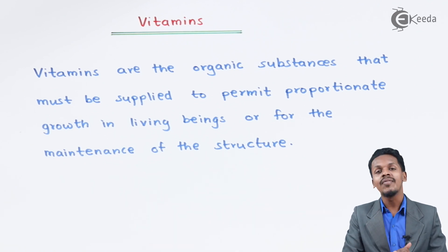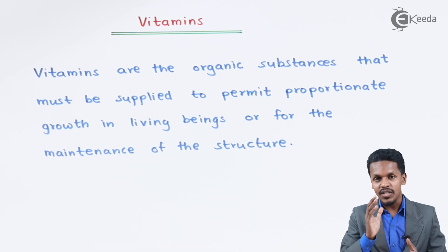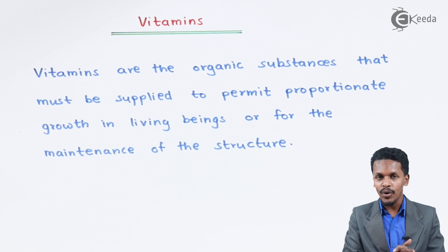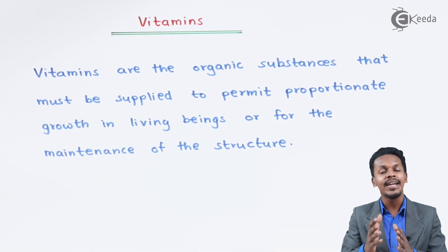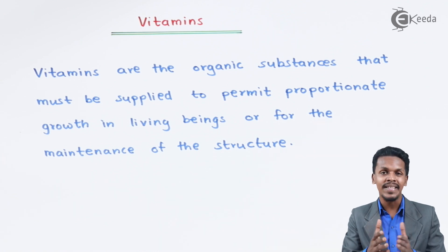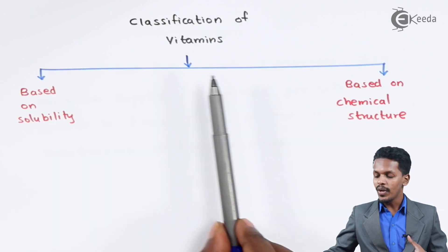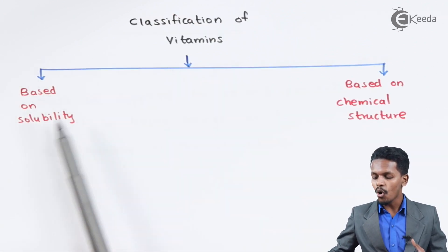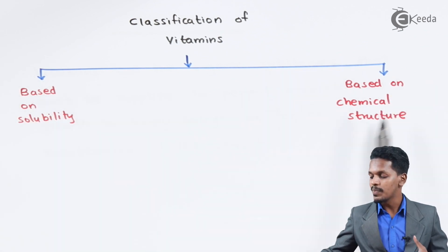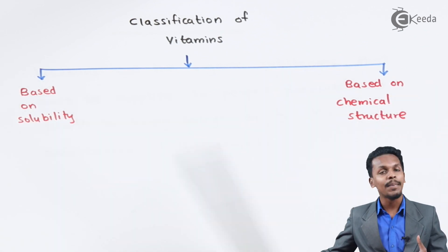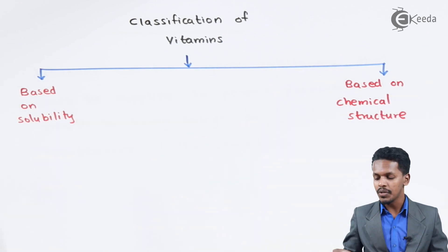Vitamins are very much essential for our body and they are divided into two types: one is based on solubility and the next one is based upon the chemical structure.